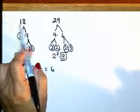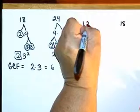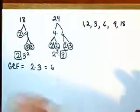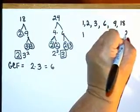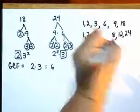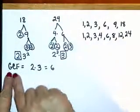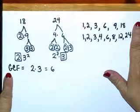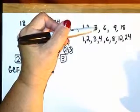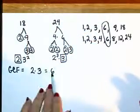We can verify: the factors of 18 are 1 and 18, 2 and 9, 3 and 6. The factors of 24 are 1 and 24, 2 and 12, 3 and 8, 4 and 6. To find the greatest common factor, we want the largest number that occurs in both lists. The largest common factor is 6, which is exactly what we got.